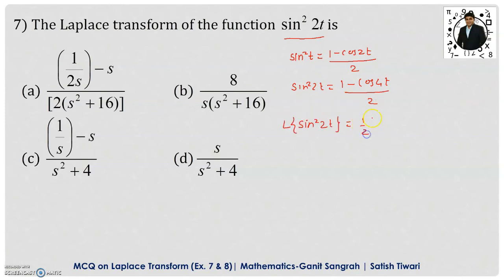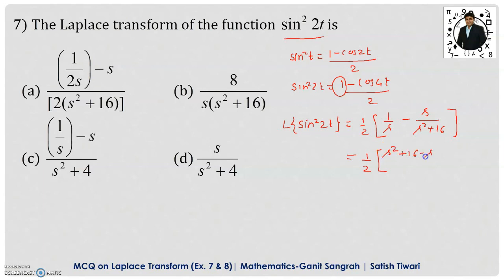Here, 1/2 is a constant and can be taken outside. The Laplace transform of 1 is 1/s, and the Laplace transform of cos(4t) is s / (s² + 16). So we get (1/2) times [1/s − s/(s² + 16)]. Taking cross multiplication gives us (s² + 16 − s²) upon s(s² + 16).